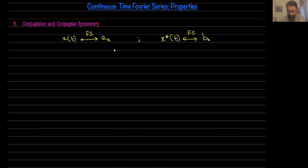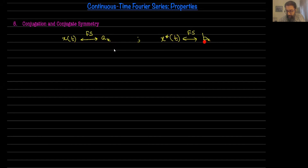This morning we're going to talk about the conjugation property of continuous time Fourier series. If x(t) is a periodic signal which has a Fourier series decomposition with Fourier series coefficients a_k, we want to ask the question: if I take the conjugation of the signal, x conjugate of t, what are the Fourier series coefficients for that conjugate signal as a function of the a_k's?